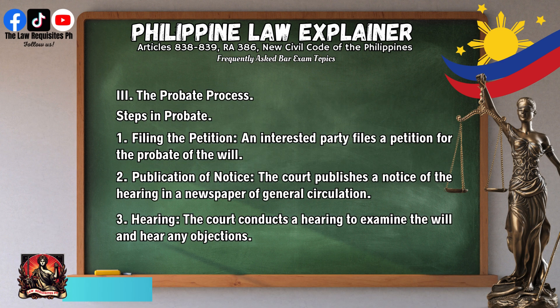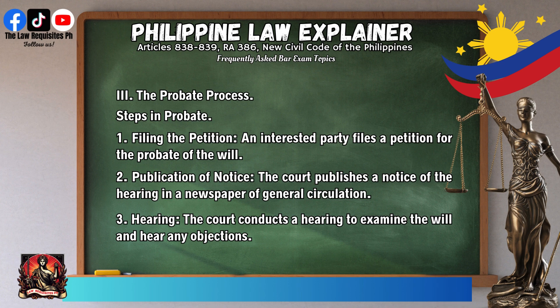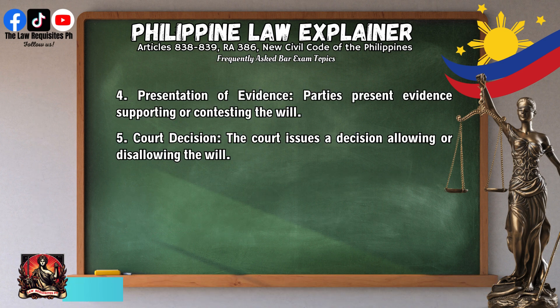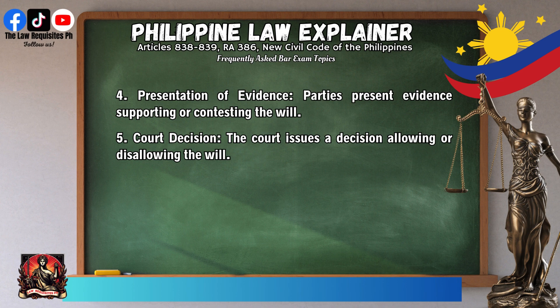The probate process involves the following steps: (1) Filing the petition — an interested party files a petition for the probate of the will; (2) Publication of notice — the court publishes a notice of the hearing in a newspaper of general circulation; (3) Hearing — the court conducts a hearing to examine the will and hear any objections; (4) Presentation of evidence — parties present evidence supporting or contesting the will; (5) Court decision — the court issues a decision allowing or disallowing the will.